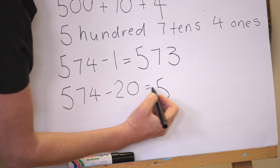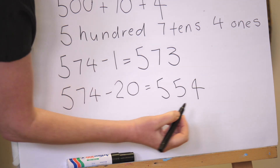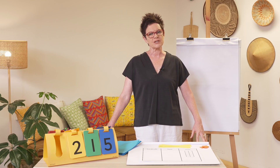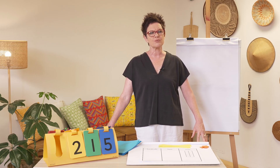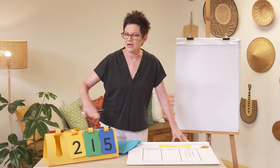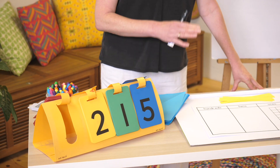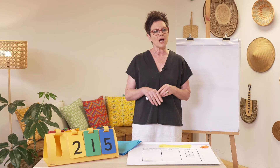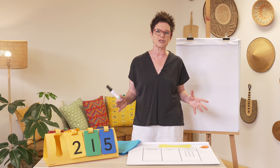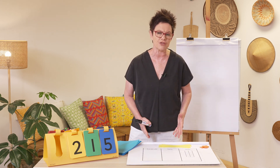Five hundred and fifty-four. Well done! Today's learning intention is we're going to represent and make some three-digit numbers. We're going to use our randomizer to help us pick some numbers to make, draw and write. We'll know we can do this when we can model our three-digit numbers and understand the parts of each three-digit number.